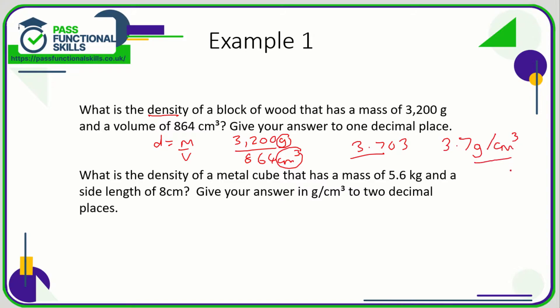Normally the units are taken care of for you. Let's take a look at this next question. We want to give our answer in grams per cubic centimeters, but here the mass is in kilos so let's turn that into grams. One kilo is a thousand grams, so 5.6 times 1000 that's 5600 grams.